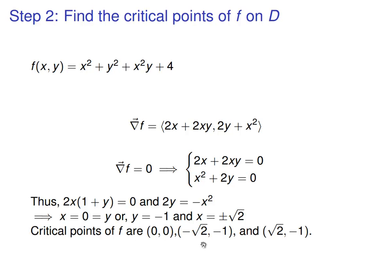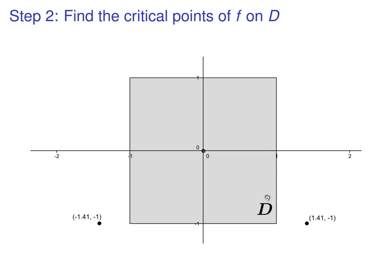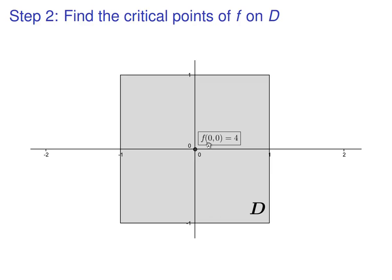And let's put them into our graph of D. So the three critical points were 0, 0, which is in the middle. So root 2, which is about 1.41, comma, negative 1, and negative root 2, comma, negative 1. Notice these critical points are outside of the region D. We don't care about them. All we care about is this critical point at 0, 0. We evaluate f at it, and we get that f of 0, 0 is 4. So we've completed step 2.